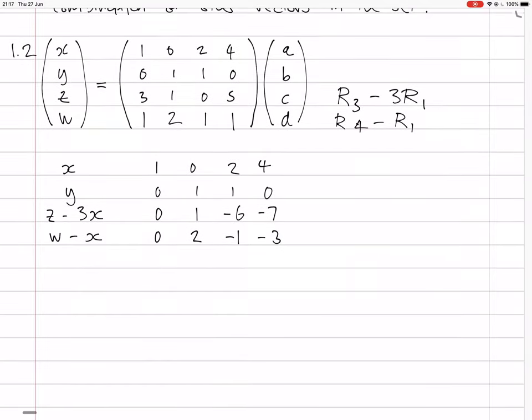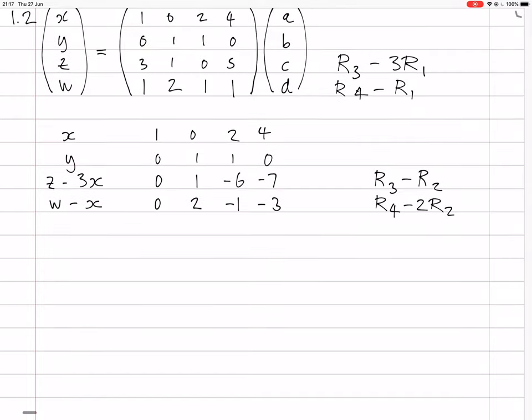Now we could do row 3 minus row 2, and row 4 minus 2 times row 2. So now x is the same, y is the same, but now we have z minus 3x minus y, and w minus x minus 2y.